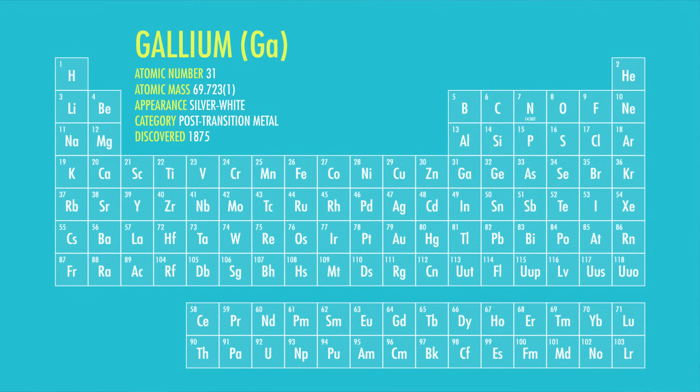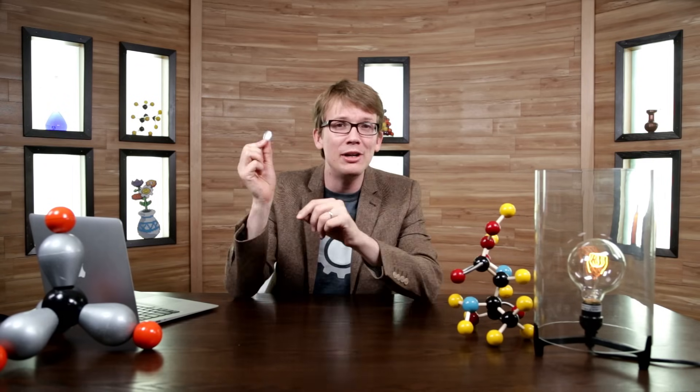Check this out. This is a little nugget of gallium that I got on eBay, number 31 on the periodic table. Gallium is a non-toxic brittle metal, not very useful. But it is ten degrees above the temperature of this room, it will melt.